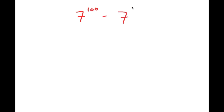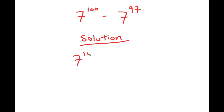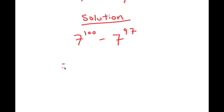In this video, I'm going to be solving the problem 7 to the power of 100 minus 7 to the power of 97. For my solution, I'm going to rewrite my problem right here. The first thing I'm going to do is rewrite 100 as 97 plus 3, so I get 7 to the power of 97 plus 3 minus 7 to the power of 97.